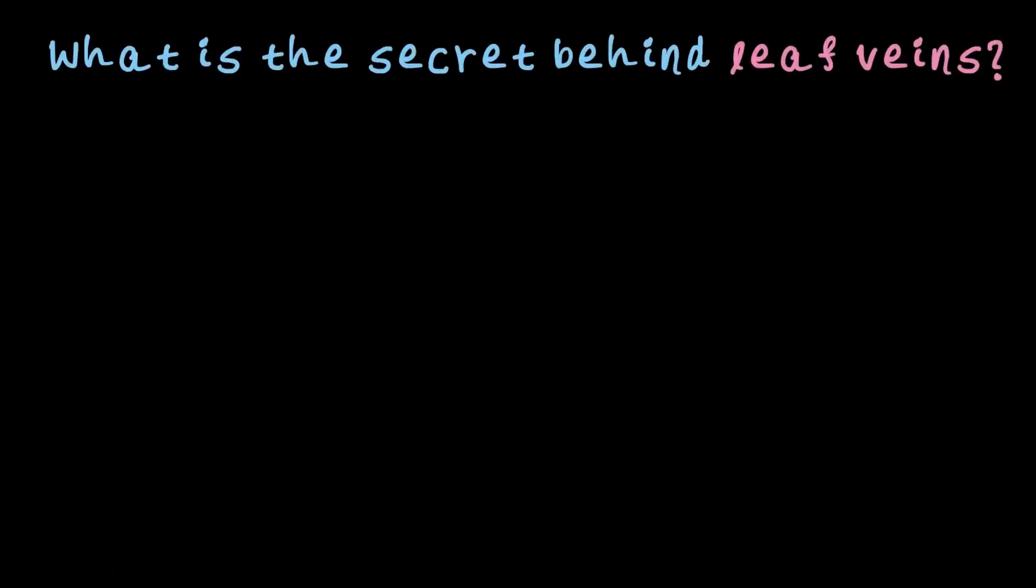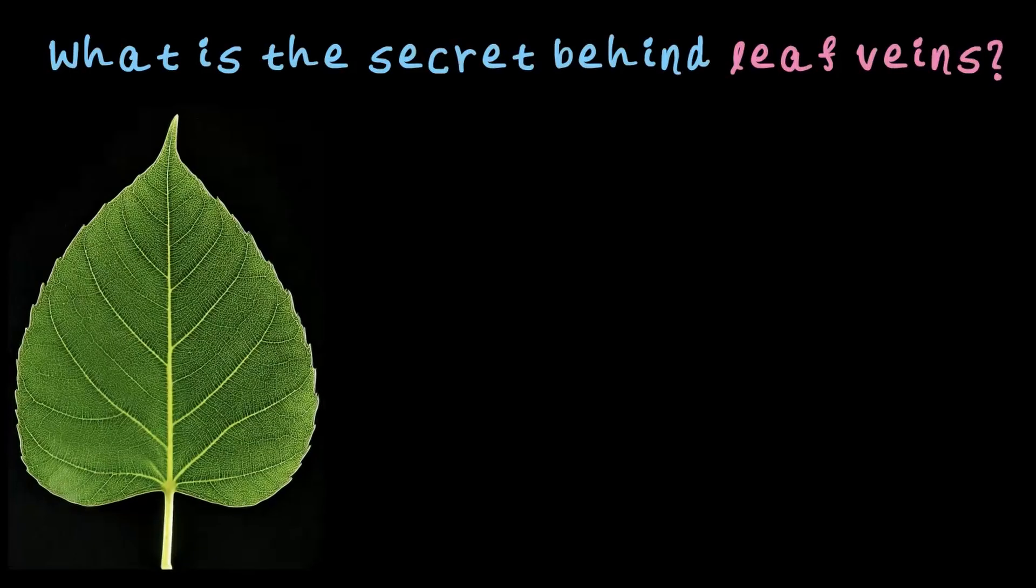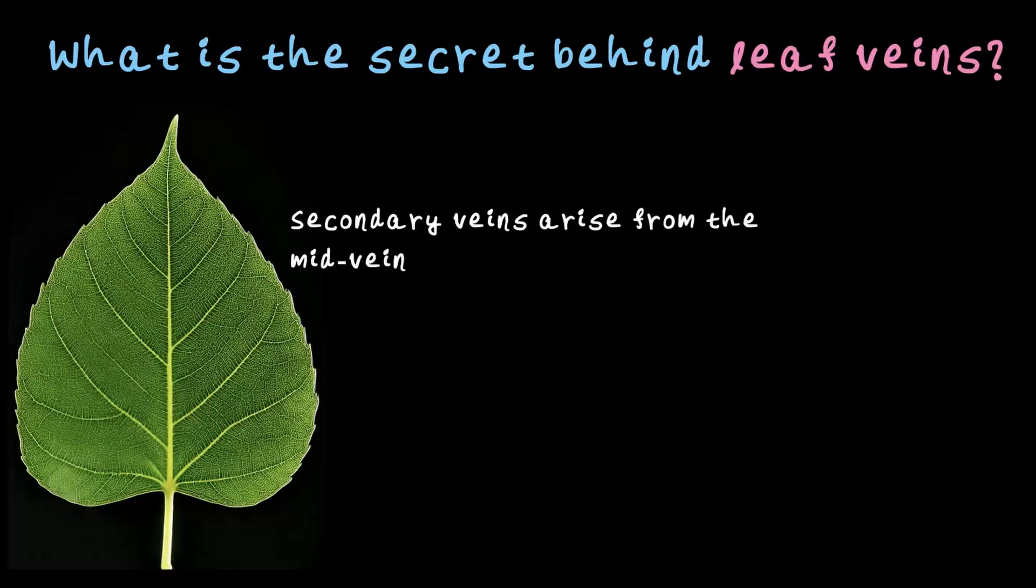Now let's uncover the secret behind leaf veins. What is the secret behind leaf veins? Take a look at this leaf here. You can see that it is divided into two equal parts by a single mid vein that runs along the midline of the leaf blade. From the mid vein, smaller secondary veins arise and branch out and form a network almost like a web. This pattern is called reticulate venation.